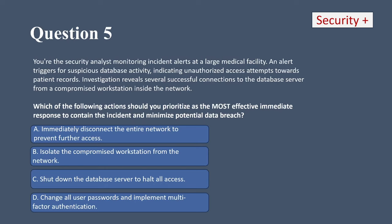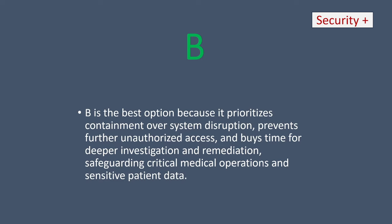It's definitely not A — that's a little extreme. It could be B, isolate the compromised workstation. Definitely not C, that's a bit extreme too. It could be D. Rereading the question, I'm going to go with B, only because it says successful connections from a compromised workstation inside the network — the next step is to contain that workstation. B is the best option because it prioritizes containment over system disruption, prevents further unauthorized access, buys time for deeper investigation and remediation, and safeguards critical medical operations and sensitive patient data.